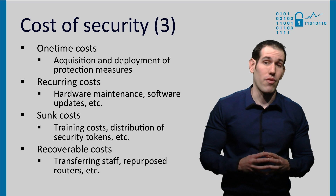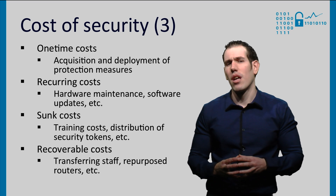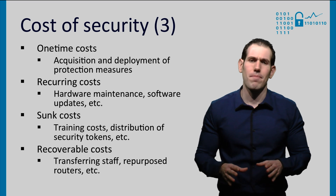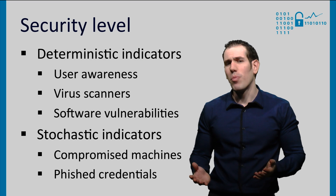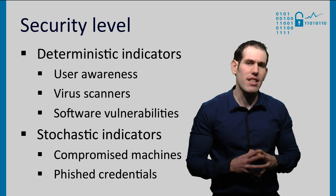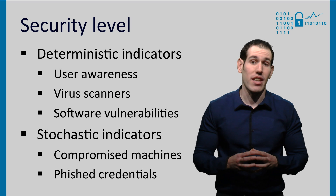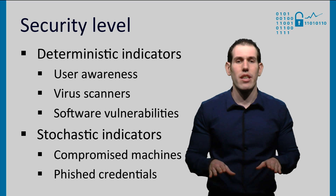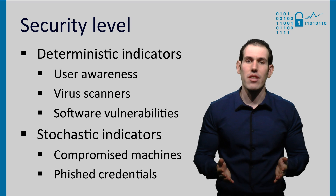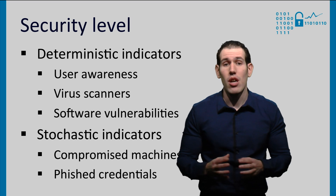Most security equipment, like firewalls, can be sold or repurposed — for example as routers — and staff can always be transferred. But expenses for training or the distribution of security tokens to customers are irreversibly spent. The second variable we want to measure is the security level, which is basically the degree to which all direct and indirect costs have mitigated the risk faced by the organization. Security level can have deterministic and stochastic indicators. Stochastic indicators are able to capture uncertainty produced by attacker behavior, while deterministic indicators do not.